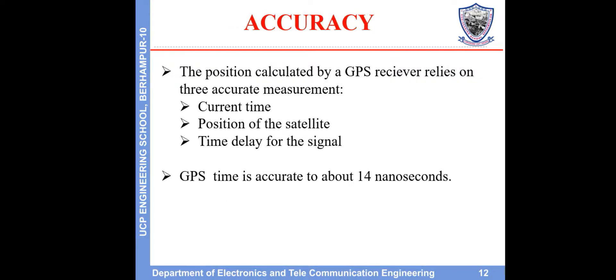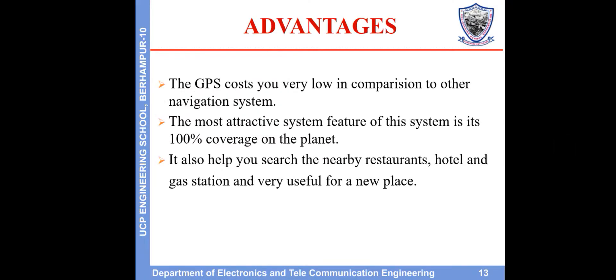Accuracy. The position calculated by a GPS receiver relies on three accurate measurements: current time, position of the satellite, and time delay for the signal. GPS time is accurate to about 14 nanoseconds.